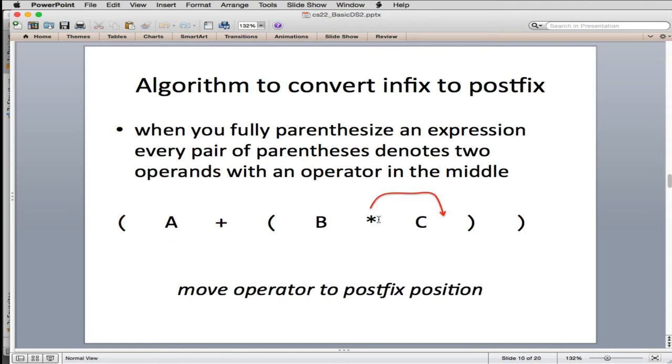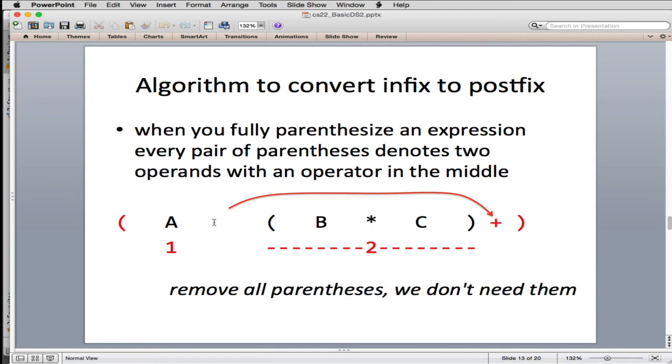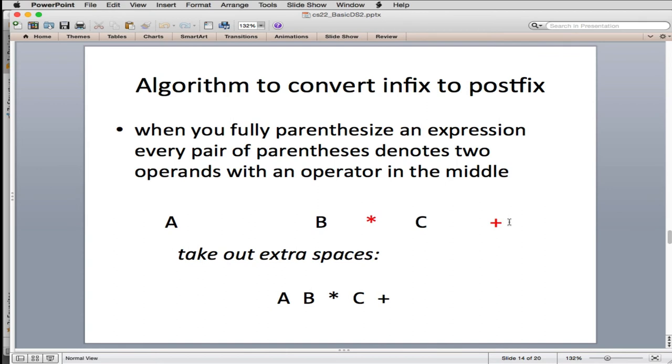So now to convert things, we start here and we move the asterisk after the C. So it'll be B, C, asterisk. There we go. And then we're going to do the same here. So now we have an operand, which is this parentheses, and another operand. And we want to move this plus over here so it's after those. So we do that. So the plus has been moved over there. Then we, it turns out after we've done that, we don't need any of the parentheses. So we're going to remove them all. And then we just take out the extra spaces and we end up with the postfix expression or the postfix expression from the original infix.